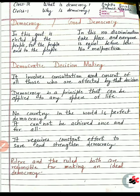Democracy में decision making में सबसे पहले consultation and consent involve होती है। अगर हमें democratic environment बनाना है तो हम किसी decision पर consultation करें और उन सभी से consent माँगें जो उस decision से affected होंगे। अगर लोगों से consult नहीं कर रहे और उनका consent नहीं ले रहे और law implement कर रहे हैं, तो that will not come into the good democracy criteria।